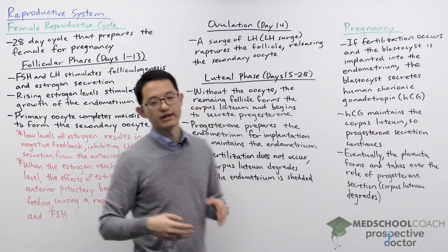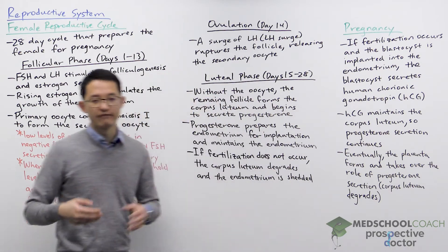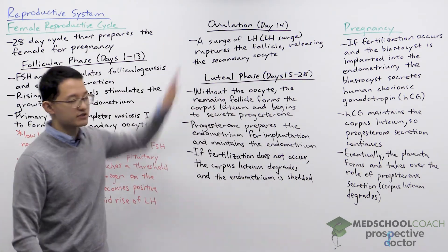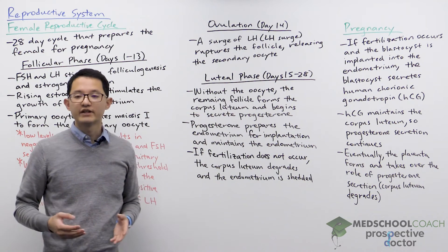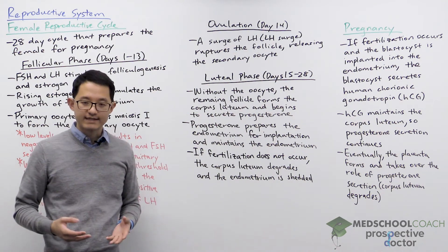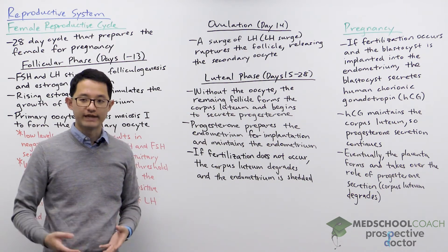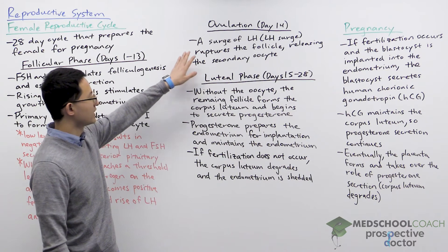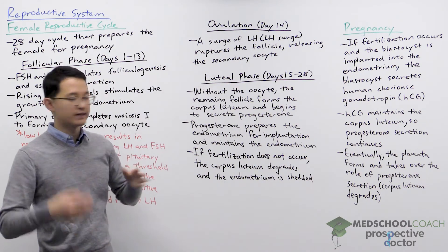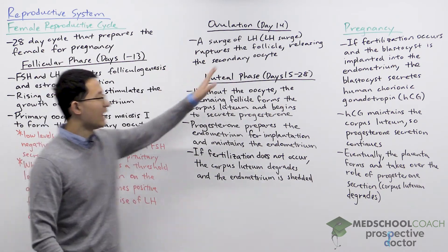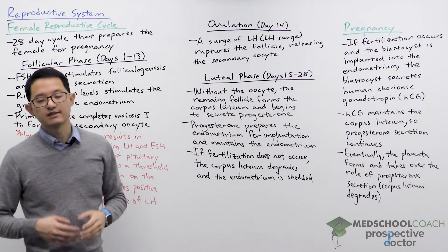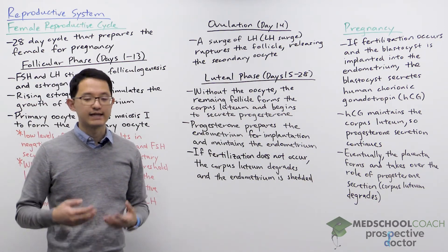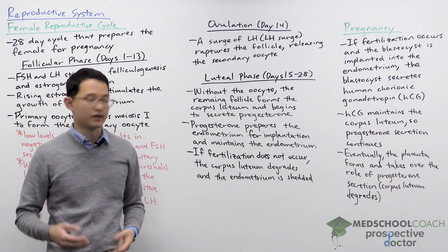That surge in the LH and FSH levels is the second phase, which is ovulation. Ovulation only lasts a single day, and this spike in LH is called the LH surge. It causes the follicle to rupture, releasing the secondary oocyte.